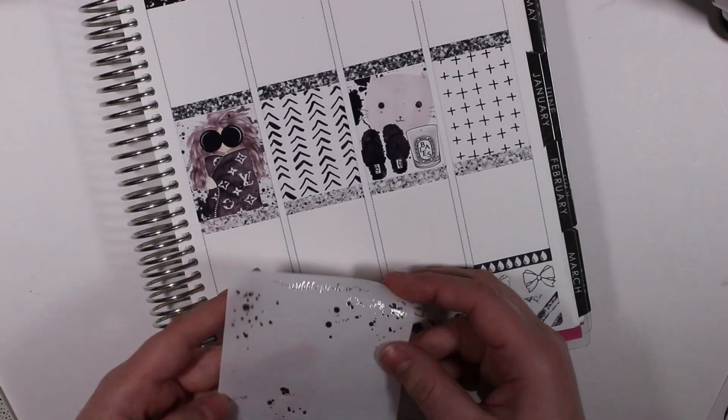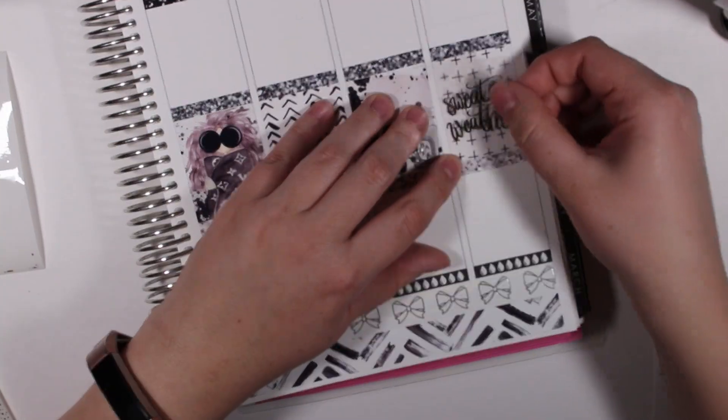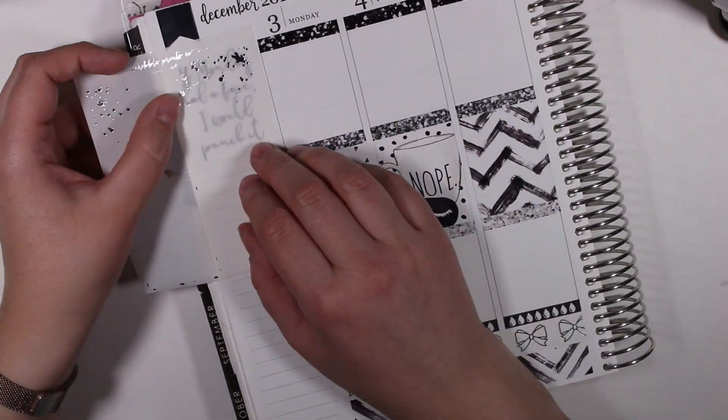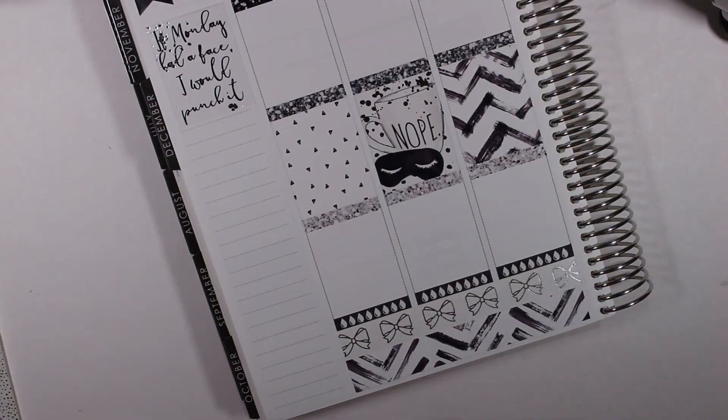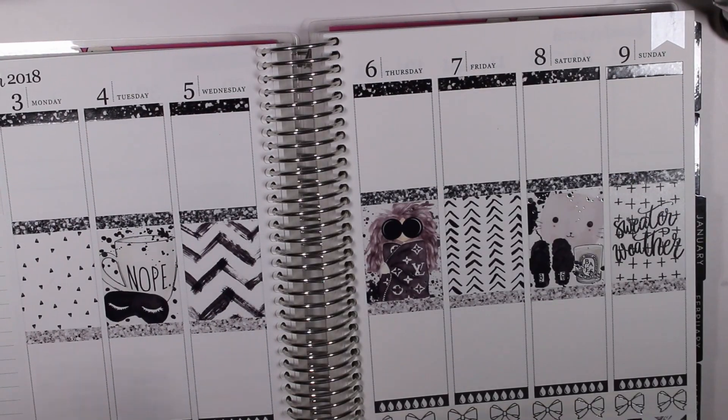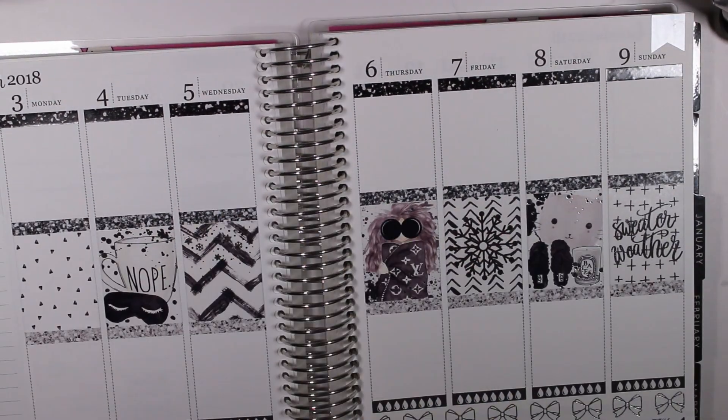So first I am laying down the full box overlays. I did use a sweater weather one on Sunday from Nicole Alexia Designs and then those splatter ones are also from Scribble Prints Co. I also wanted to make this kit look a little bit more wintery because it is more of an anytime kit, so I added some snowflake overlays from Nicole Alexia Designs.